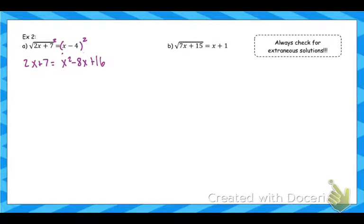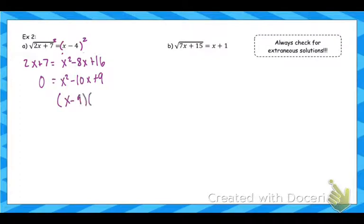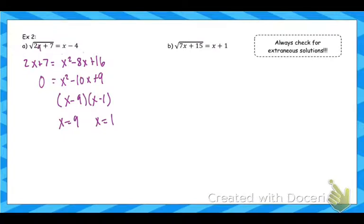What we're left with is a quadratic, so to solve it we set it equal to 0. Then we see if we can factor — what multiplies to 9 and adds to negative 10 gives the two possible solutions. Now we test these to see if they work or are extraneous by plugging back into the original. Plugging in 9: 2 times 9 is 18, plus 7 is 25, the square root of 25 is 5, and 9 minus 4 is 5 on the right side. So 9 works.